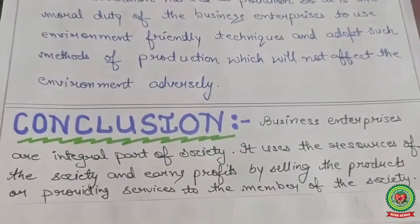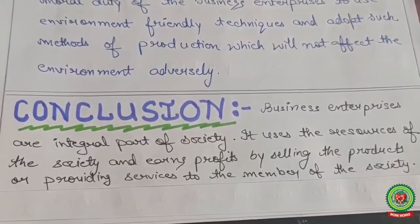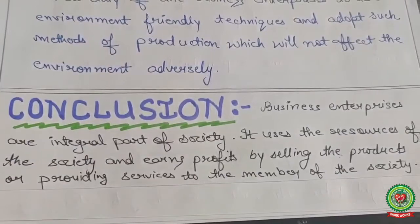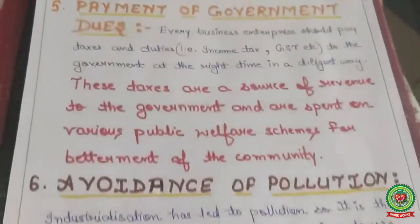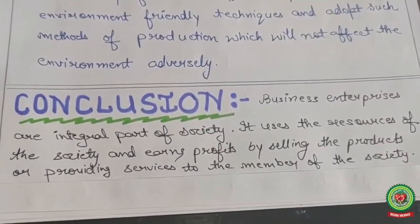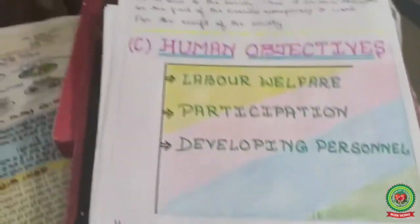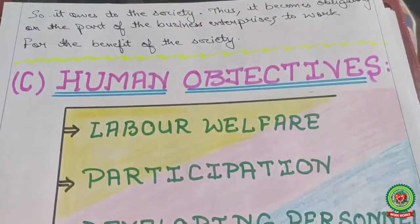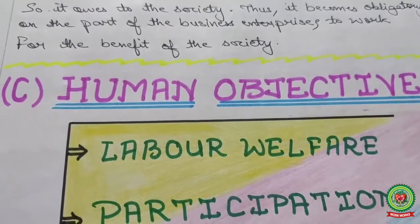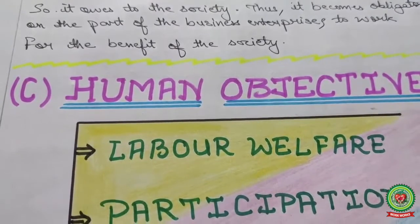In conclusion, business enterprises are an integral part of society. They use the resources of society and earn profit by selling products or providing services to members of society. Since business uses society's resources, it is the responsibility of the business to give something back to society out of its profits. It therefore becomes obligatory on the part of business enterprises to work for the benefit of society. Those are all the social objectives of business.